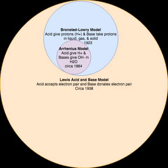Bronsted-Lowry acid-base behavior is formally independent of any solvent, making it more all-encompassing than the Arrhenius model. The calculation of pH under the Arrhenius model depended on alkalized bases dissolving in water. The Bronsted-Lowry model expanded what could be pH tested using insoluble and soluble solutions — gas, liquid, solid. The general formula for acid-base reactions according to the Bronsted-Lowry definition is: HA + B → BH+ + A−, where HA represents the acid, B represents the base, BH+ represents the conjugate acid of B, and A− represents the conjugate base of HA.